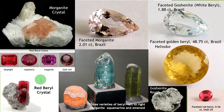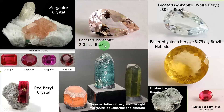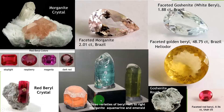Look at this faceted red beryl — 0.56 carats from Utah, USA. Now, moving to morganite crystals — this is morganite with the mother stone. Look at the faceted morganite, 2.01 carats from Brazil. And here is goshenite — that means white beryl — 1.008 carats from Brazil. Faceted golden beryl, yellowish golden color, 48.75 carats from Brazil — it is named heliodor, or golden beryl. Here, three varieties of beryl left to right: left is morganite crystal, center is aquamarine, and here is emerald.